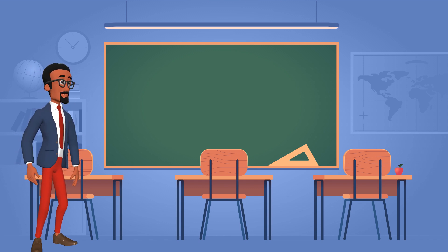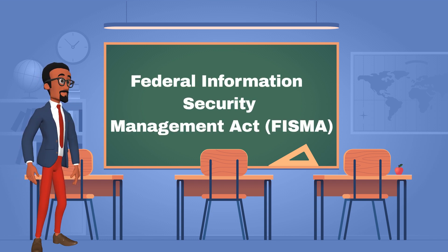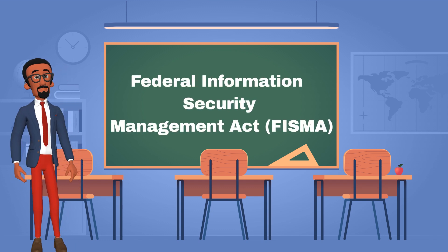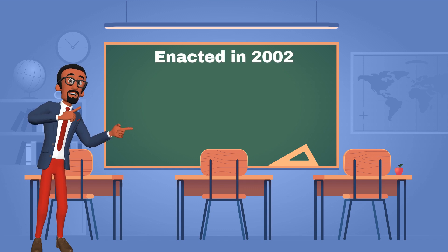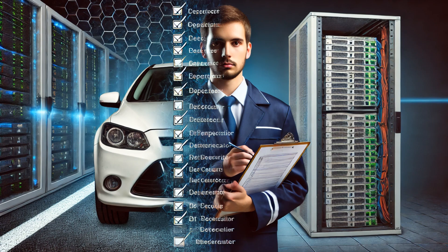The requirement we're going to focus on is called the Federal Information Security Management Act, FISMA. It was enacted in 2002. FISMA basically requires every network that holds federal data to address a set of security control requirements — sort of like the car inspector analogy I mentioned earlier. Every network has a long checklist of security controls to check off before the network can be used.